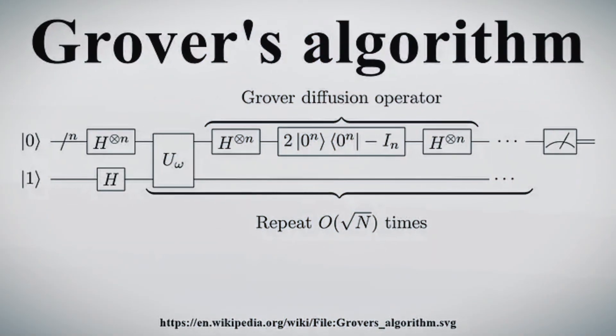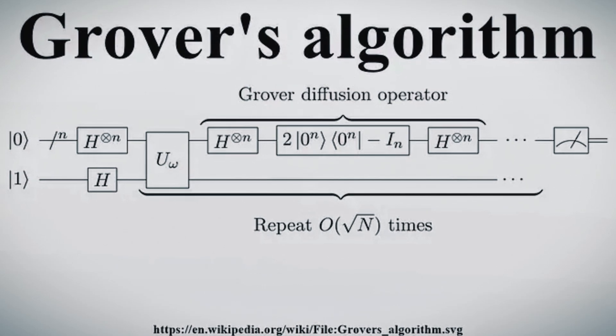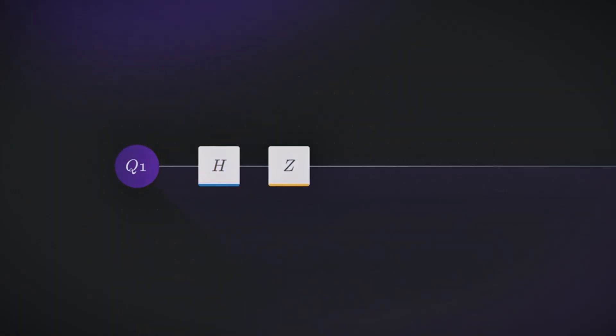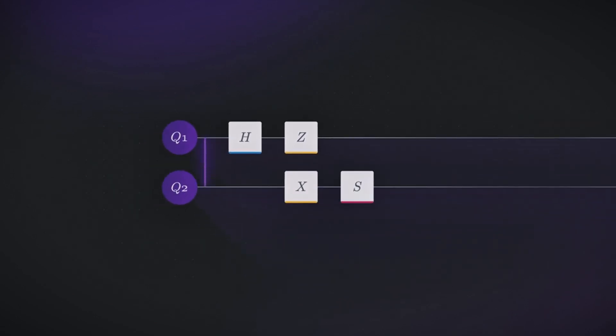And let's not forget Grover's algorithm. It's like the Sherlock Holmes of the quantum world, sleuthing its way through unsorted databases with such efficiency that it leaves traditional search methods in the dust. But here's the kicker.